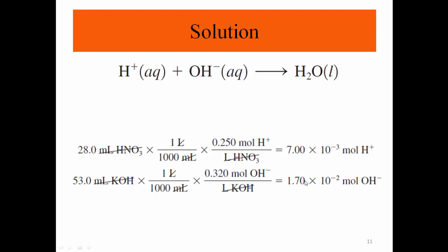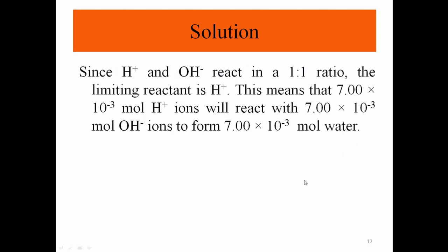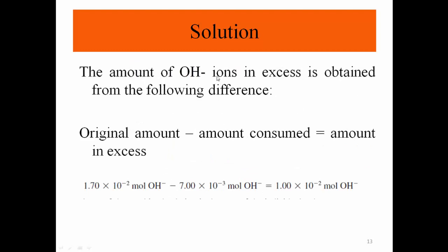The hydroxide in excess is found by subtracting the amount consumed from the original amount: 1.7 × 10⁻² moles OH⁻ minus 7 × 10⁻³ moles OH⁻ consumed gives 1.0 × 10⁻² moles of hydroxide ions remaining in excess after the reaction is complete.